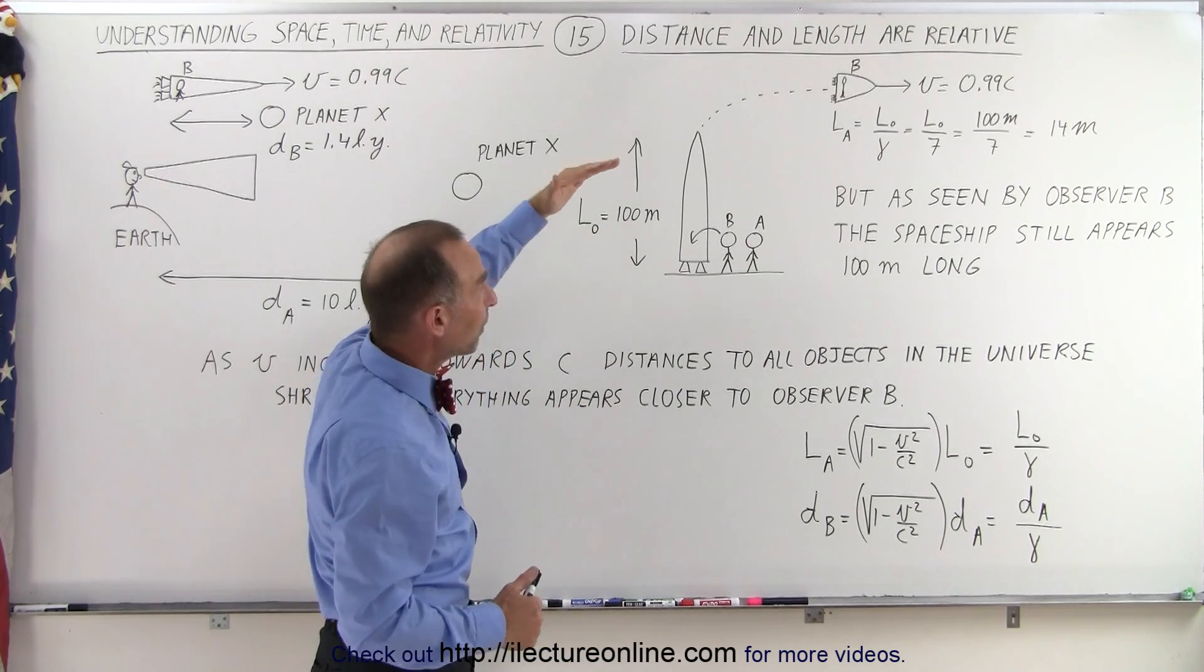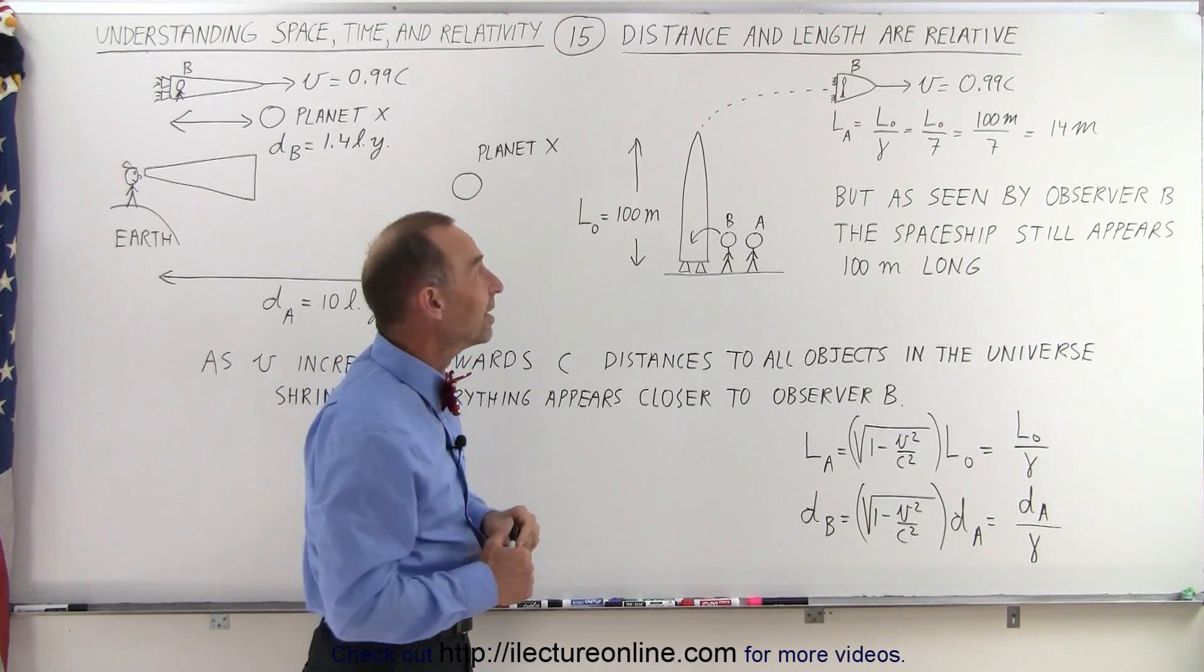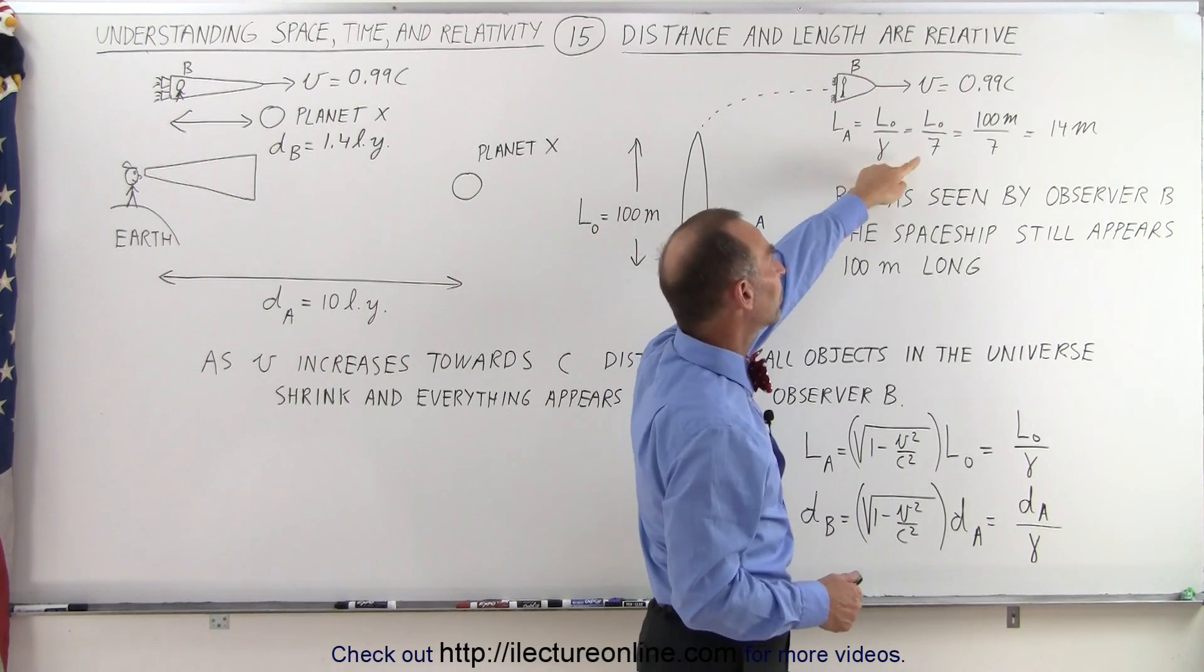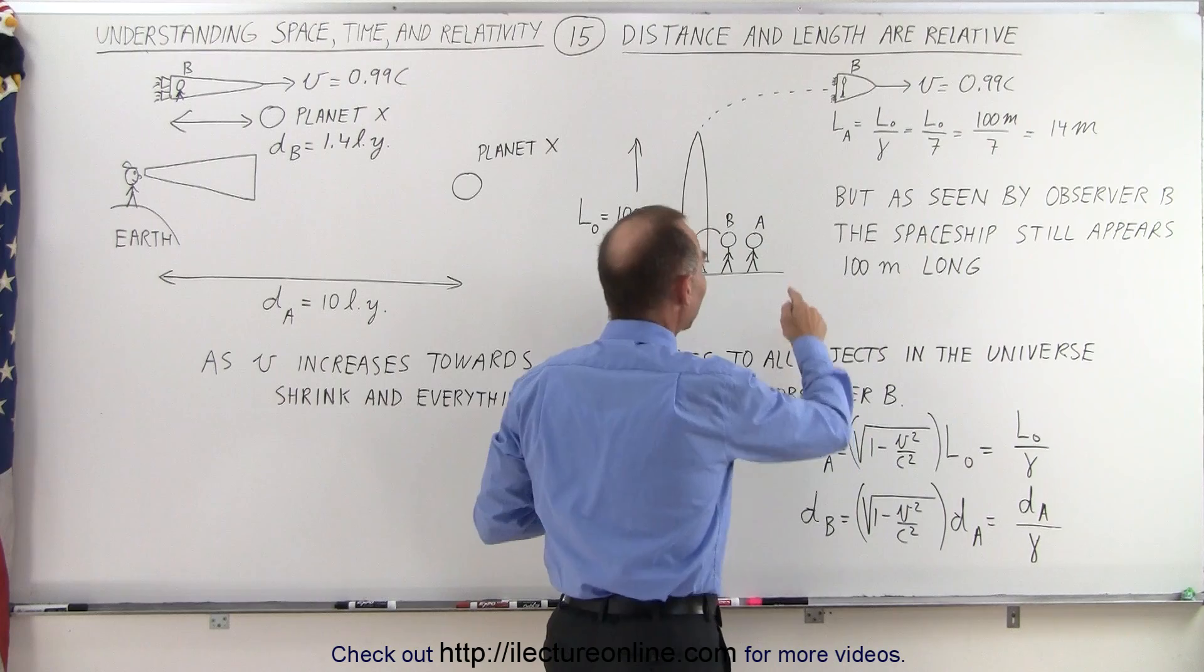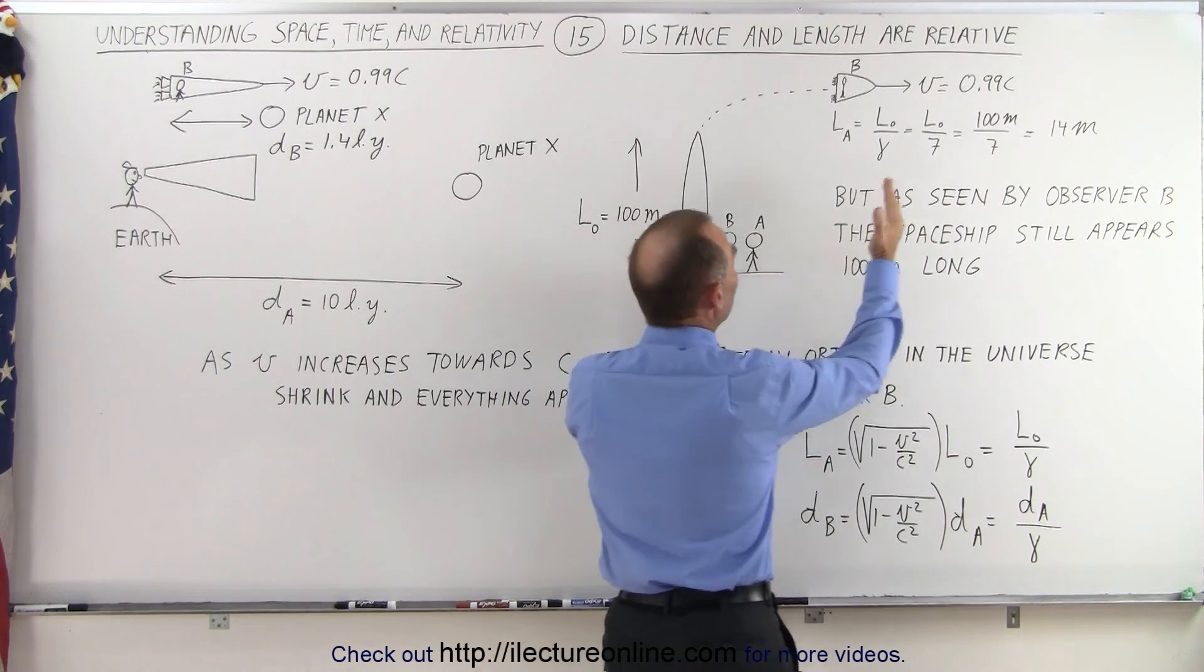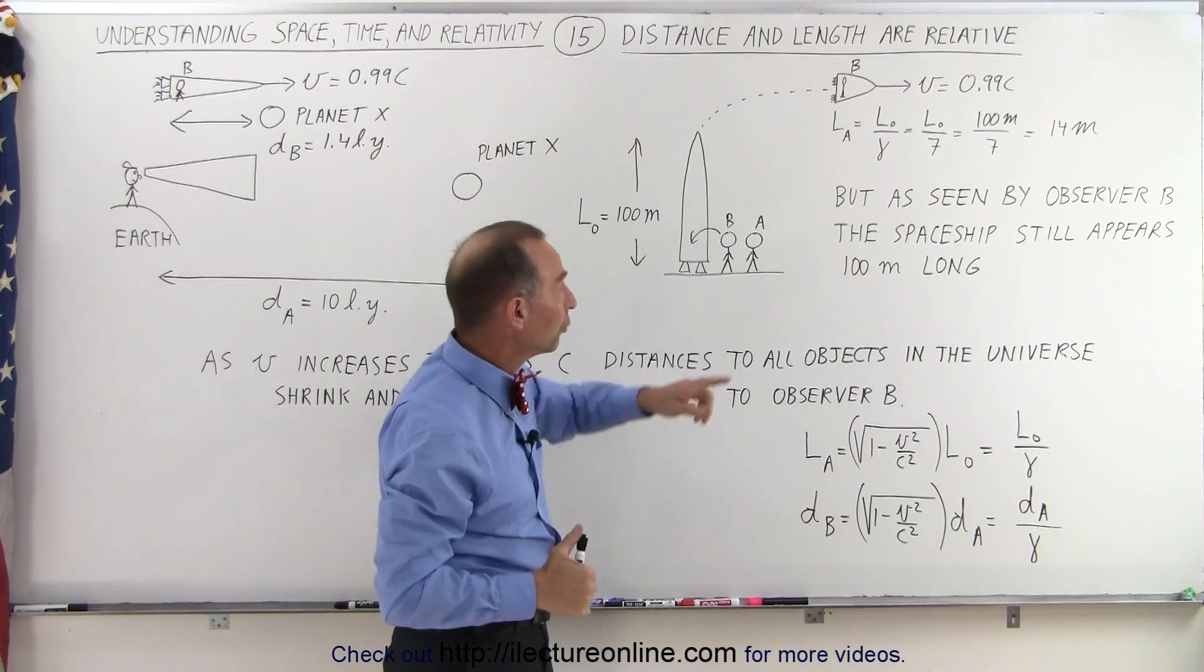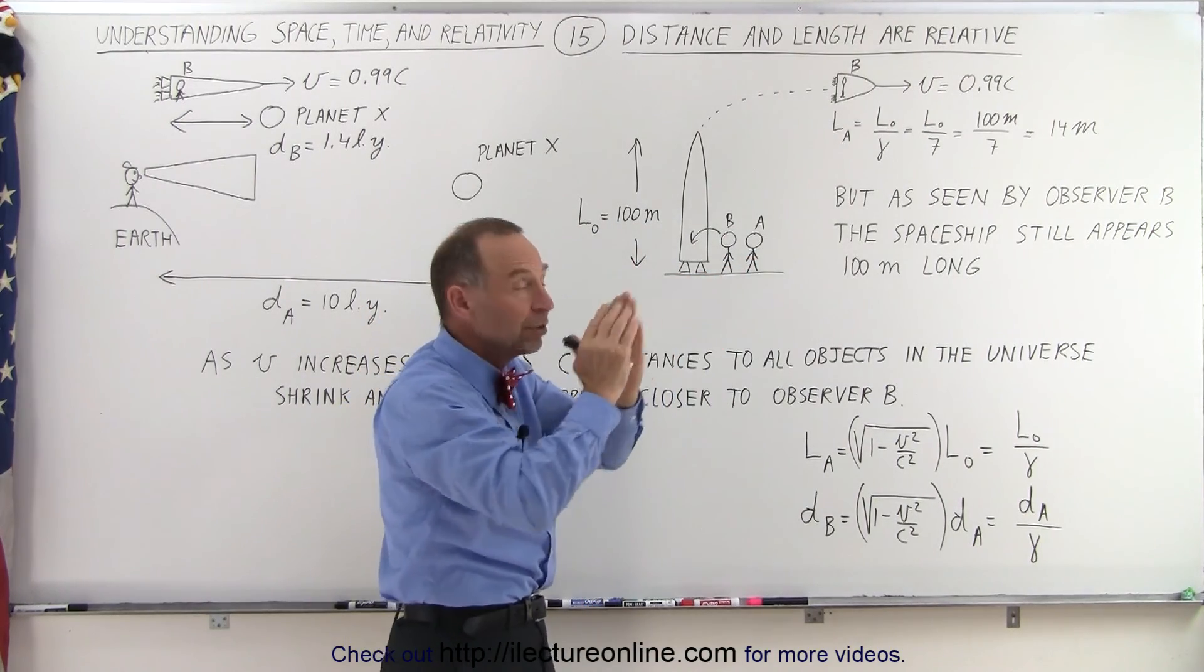But once the spaceship reaches space and speeds up to 0.99c, we then remember that the Lorentz constant is equal to 7, and the way that affects the length of the spaceship. As seen by Observer A, the spaceship shrinks to one-seventh its original length, and according to Observer A on the Earth, the spaceship now only appears to be about 14 meters long.